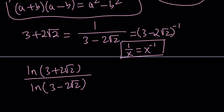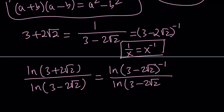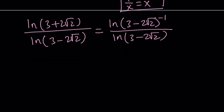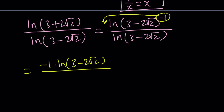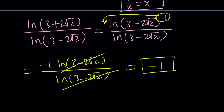Let's plug this in — replace 3 plus 2 root 2 with 3 minus 2 root 2 to the power negative 1, then divide by ln(3 minus 2 root 2). Notice the arguments for both log functions are the same, except the top one has an exponent. By the log rule of exponents, we can move that exponent to the front as a coefficient. This becomes negative 1 times ln(3 minus 2 root 2) divided by ln(3 minus 2 root 2). These are the same, so they cancel out — and they're not zero because ln(1) is 0 and these numbers are not 1. So the answer is negative 1.